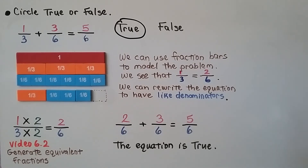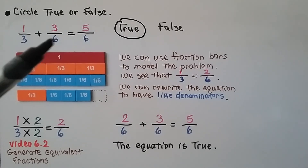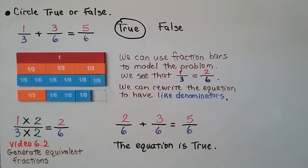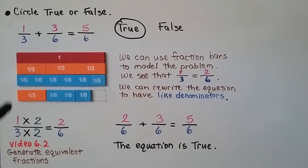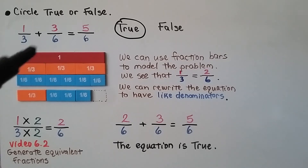When we need to add fractions and their denominators are not alike, we can generate equivalent fractions using multiplication to make them have the same denominator.